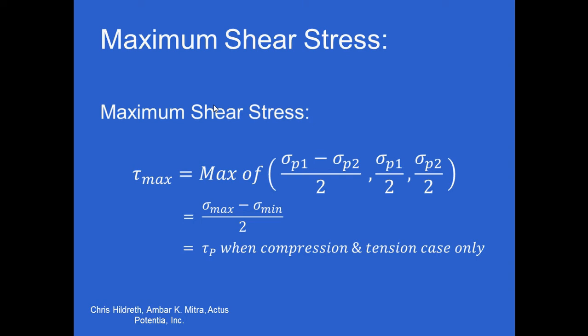There's also your maximum shear stress. This will not always be the same as your principal shear. It is only the same as your principal shear when you have a compression and tension case, where on your vertical surface you have tension, and then your horizontal surface you have compression, or vice versa. Cases where it's tension and tension or compression and compression, your tau max will be different from your principal shear. You'll have to calculate it where you look at your maximum stress value minus the minimum, divided by 2.